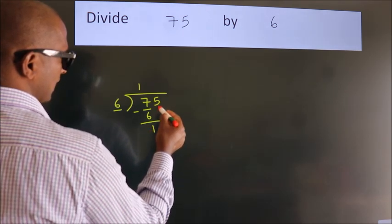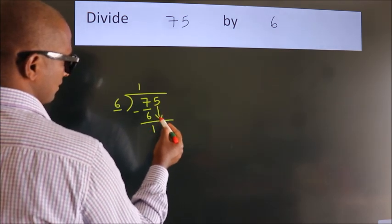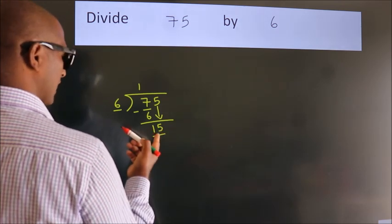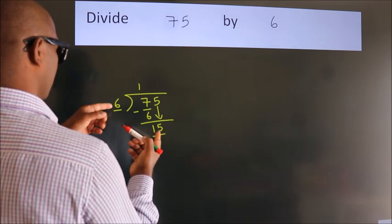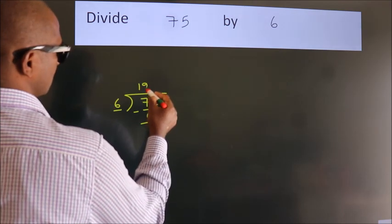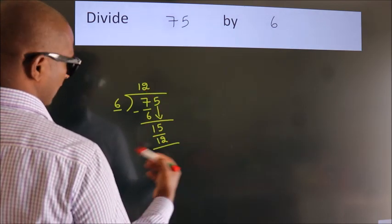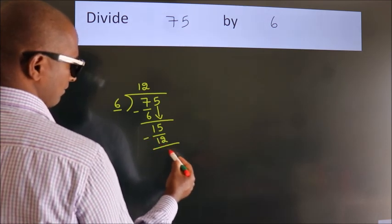After this bring down the beside number. So 5 down. So 15. A number close to 15 in 6 table is 6 2s 12. Now we subtract. We get 3.